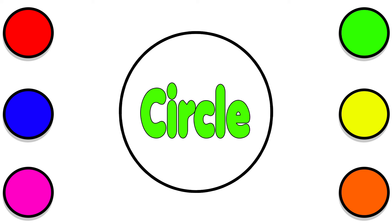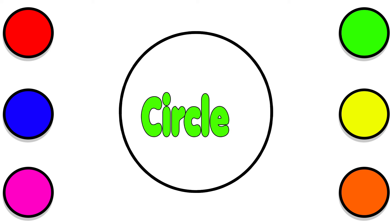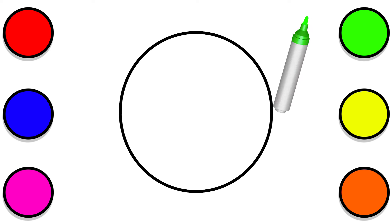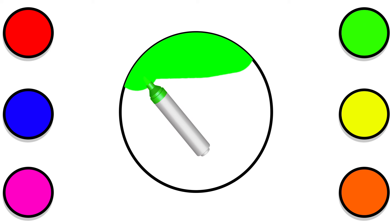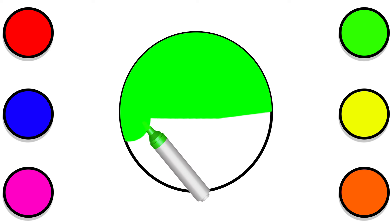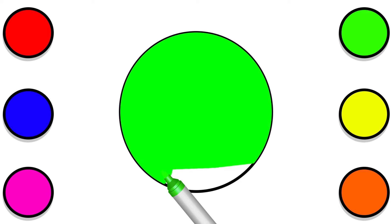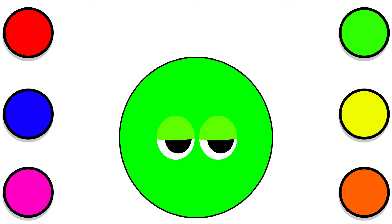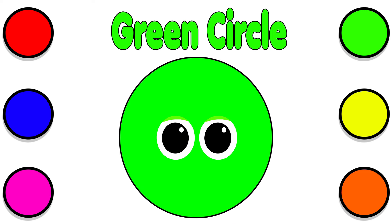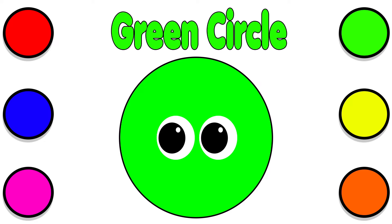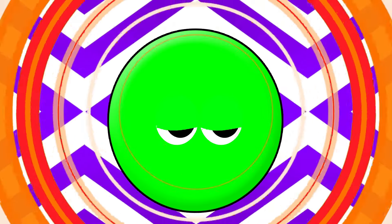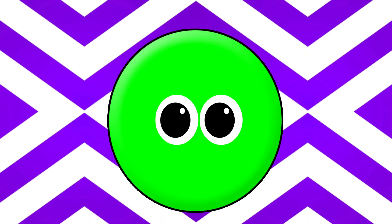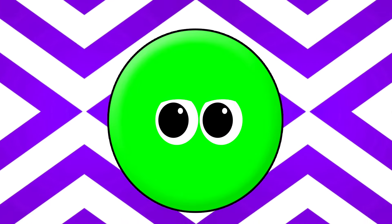Circle. Green Circle. A circle has no sides and no corners.